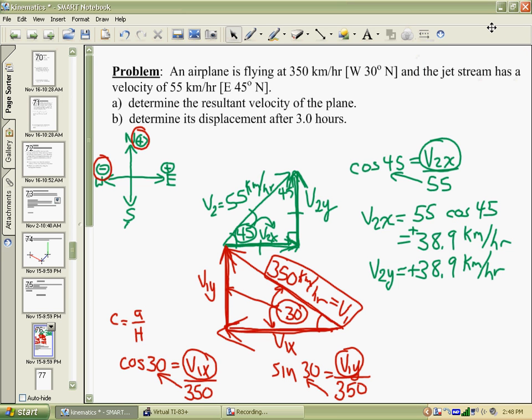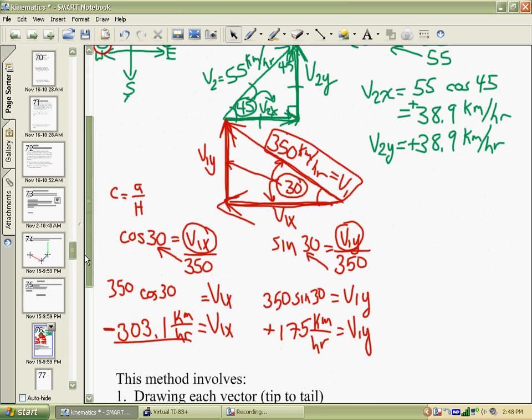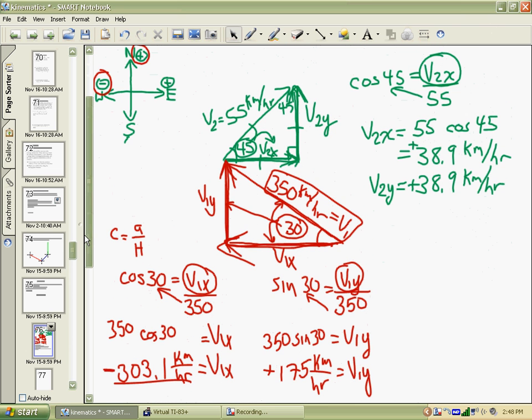Okay, on to part two of our video where we're still looking at our airplane flying question where it was going 350 kilometers off to the west and at 55 kilometers per hour at a different angle. We still have our picture drawn, and if we look, we had already broken everything up into x and y coordinates.